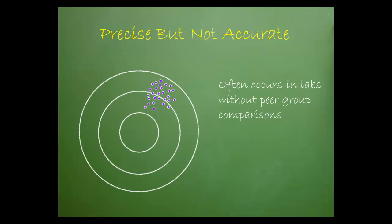This form of precision often occurs in a laboratory monitoring its own results without a peer group comparison. Because the numbers are replicating well, these labs fall into a false sense of security that the numbers are also accurate.